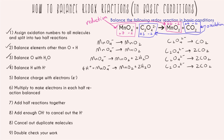Step five: balance the charge with electrons. Looking at the manganese side: the left has a charge of positive four from the hydrogens and negative one from the manganese oxide, totaling positive three. The right-hand side is neutral, giving a charge of zero. Since electrons have a charge of negative one, we always add electrons to the more positive side — so we add three electrons to the left-hand side to bring the charge to zero.